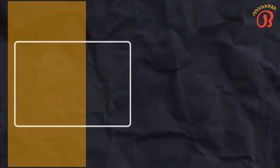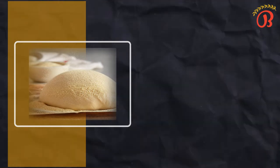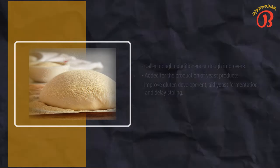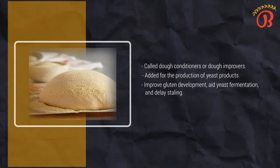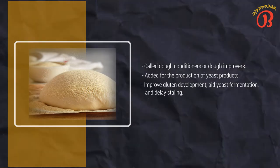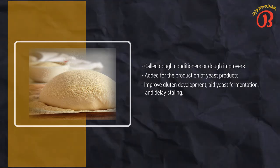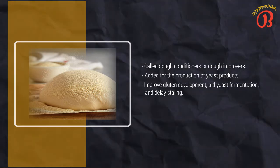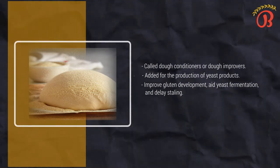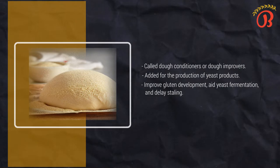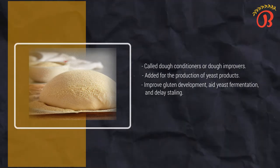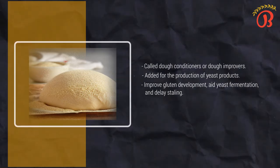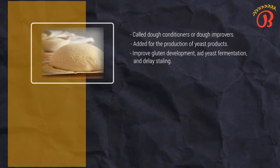Now let's talk about bread improvers. Bread improvers, also called dough conditioners or dough improvers, are sometimes added by the baker for the production of yeast products. They contain a variety of ingredients that improve gluten development, aid yeast fermentation, and delay staling. Adding too much improver, however, to yeast dough decreases bread quality.